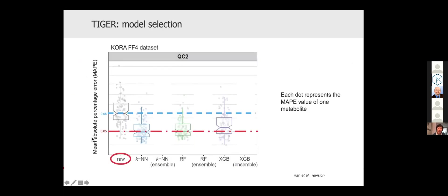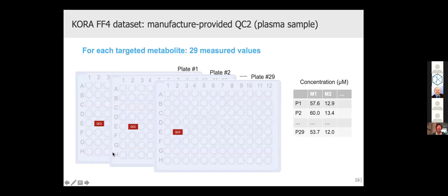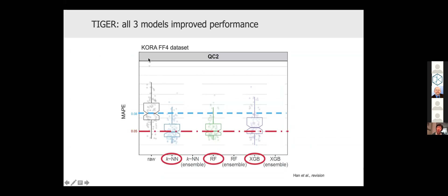Let's further zoom in. Here I show you the MAPE value in the KORA-S4 dataset of QC2 samples. Each dot in each box plot represents the MAPE value for one metabolite. Here I start with raw value. In the KORA-S4 dataset, we have 29 plates, we have 29 manufacturer provided QC plasma samples, and we have for each metabolite 29 values. Using the raw values, we calculate for each metabolite the MAPE value. This is the median of the value. As you can see, we used all three machine learning models and compared to the raw achieved improved performance.